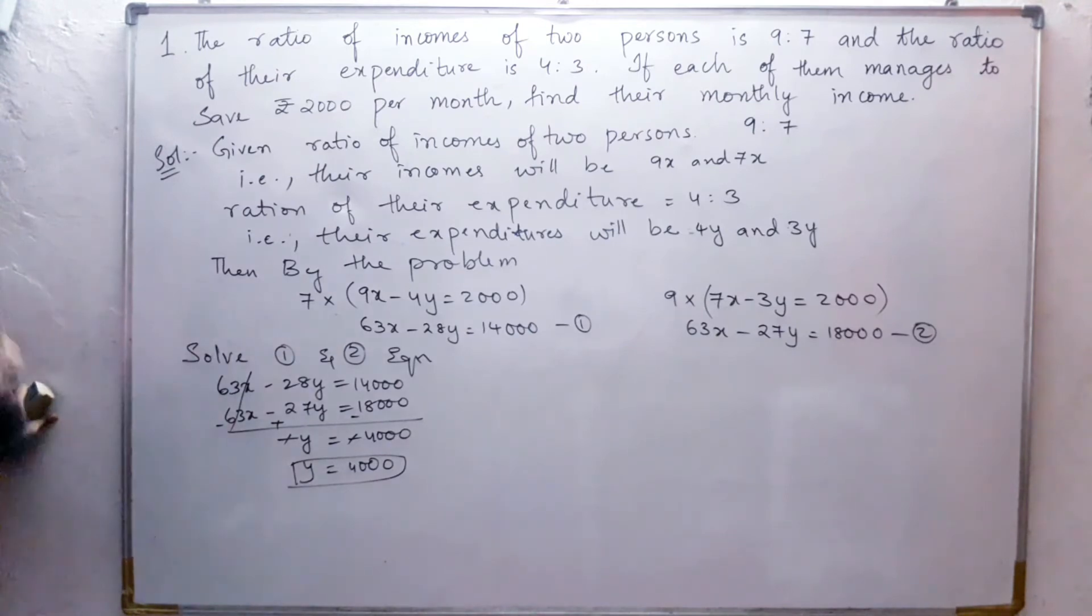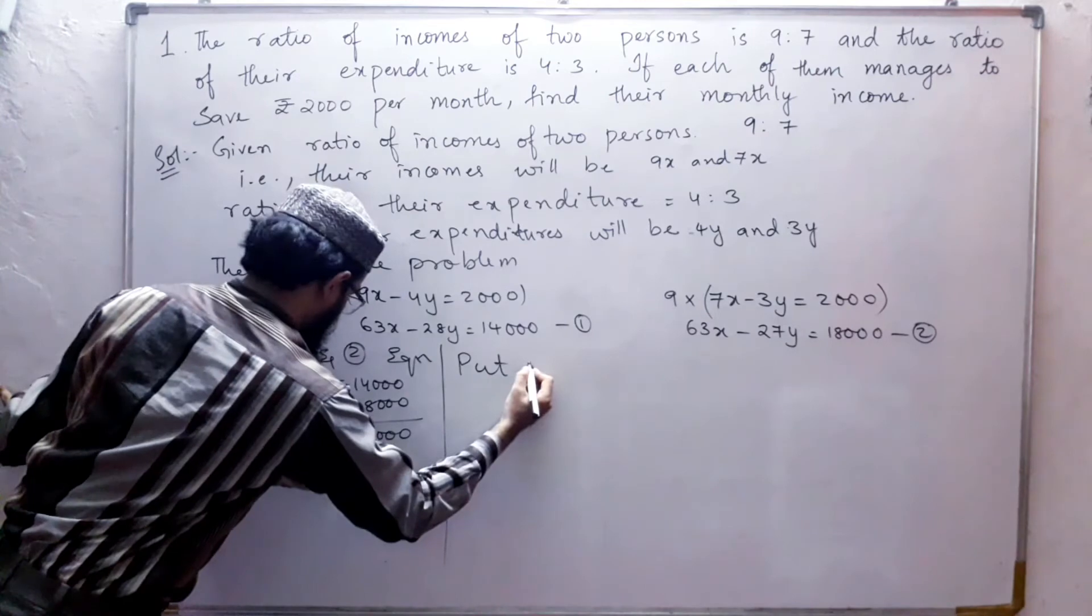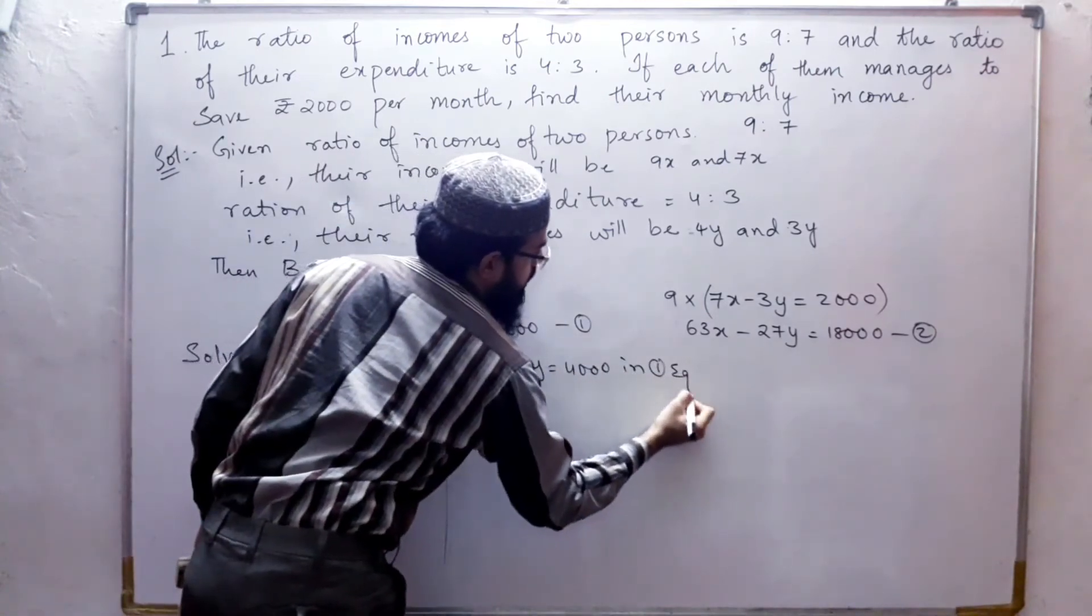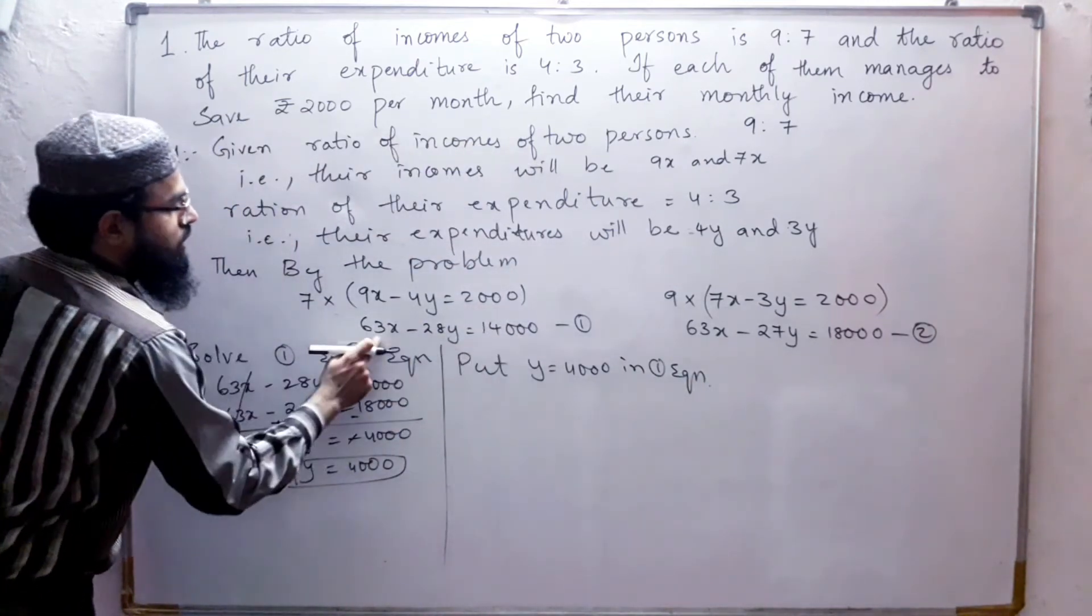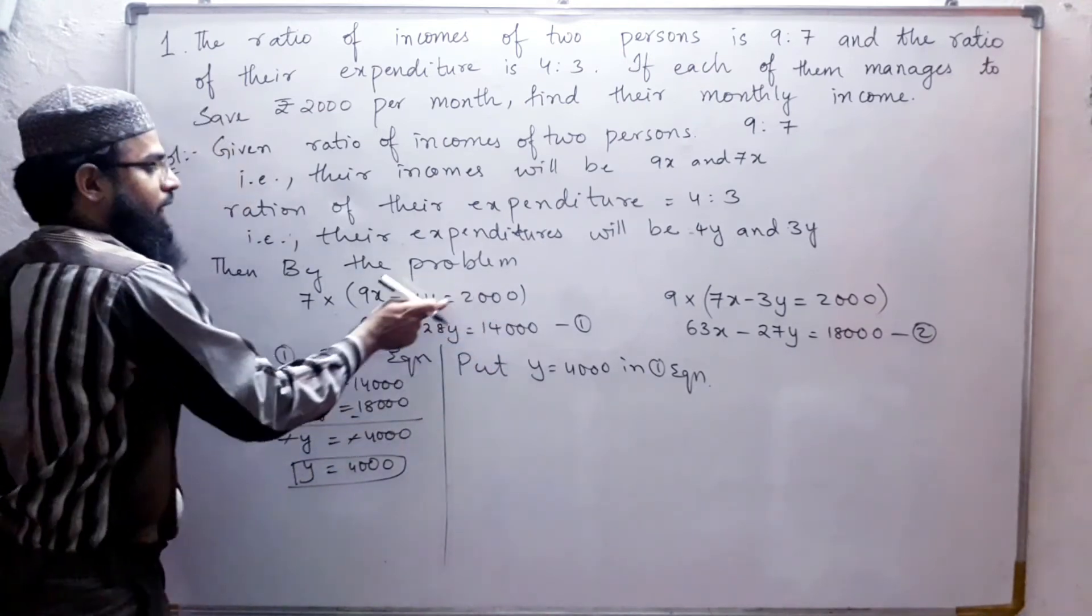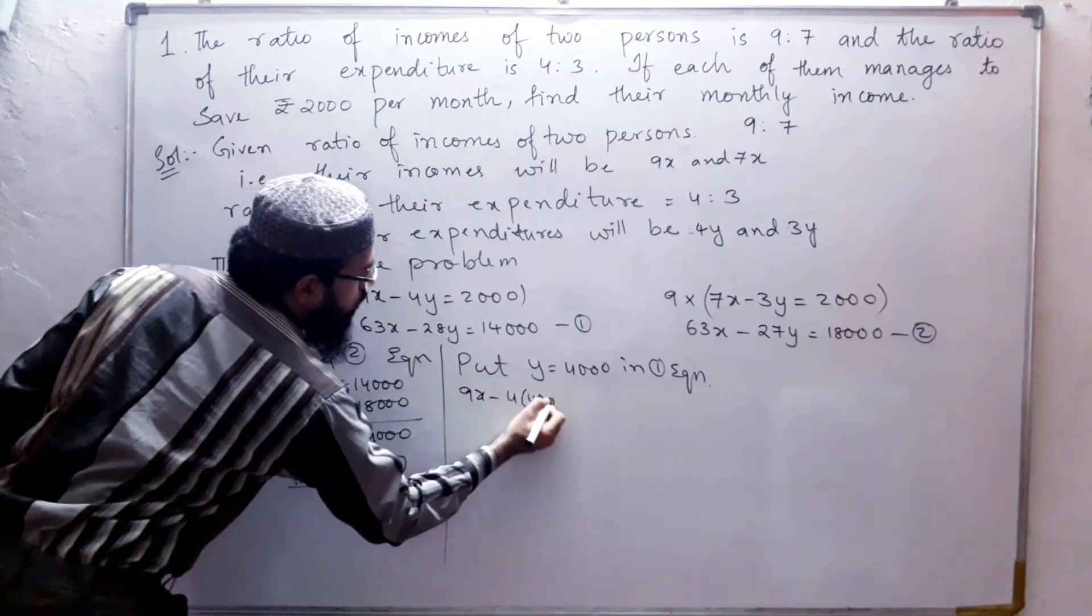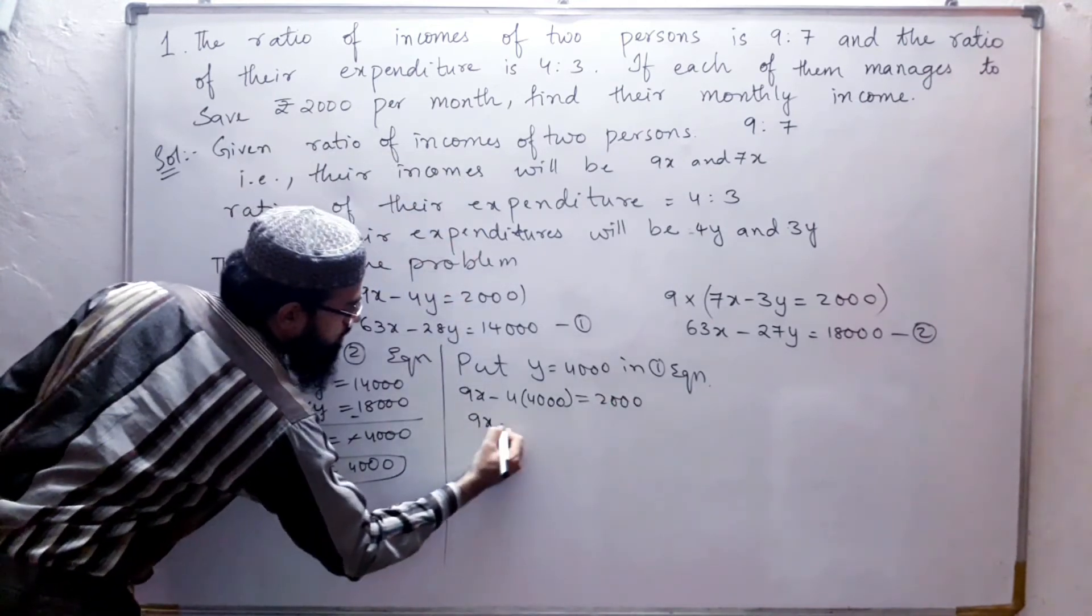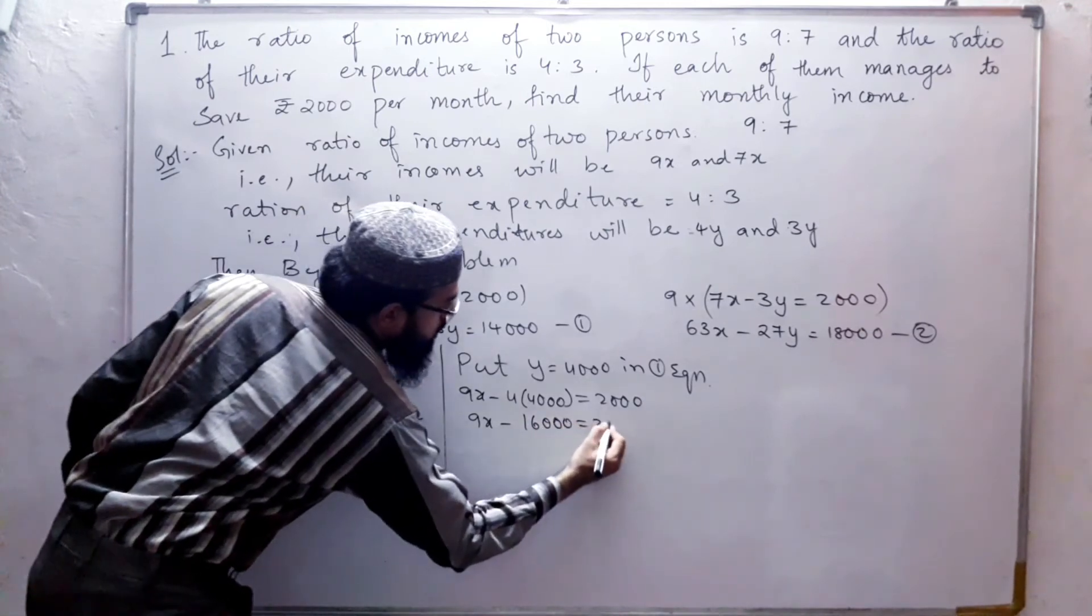Let us find out the value of x. Put y equals 4000 in the first equation. 9x minus 4 times 4000 equals 2000. So 9x minus 16,000 equals 2000.